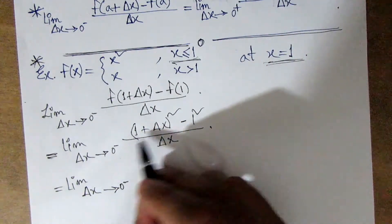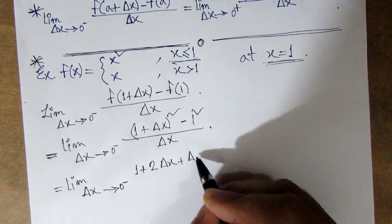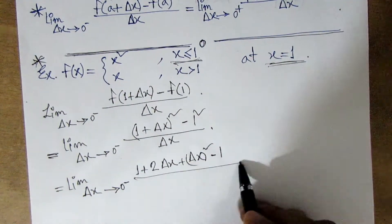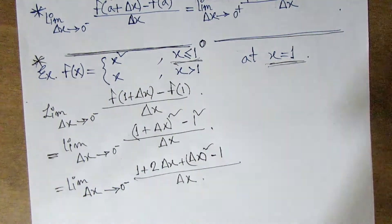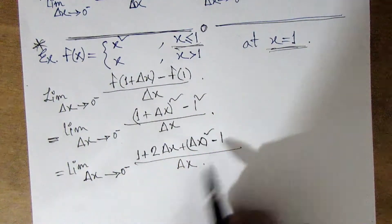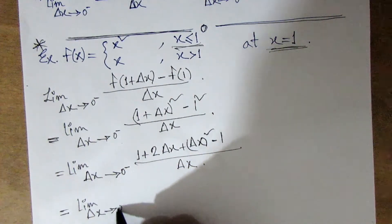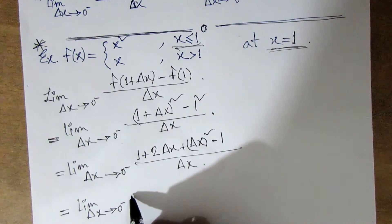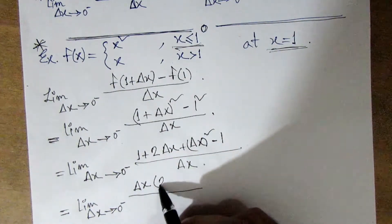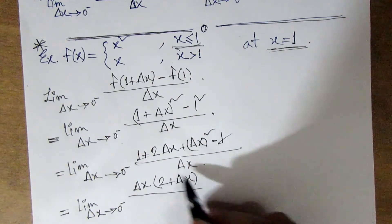Using the (a + b) whole square formula: (1 + Δx)² = 1² + 2·Δx + Δx². Then we take Δx common, so we have 2 and Δx, plus Δx.